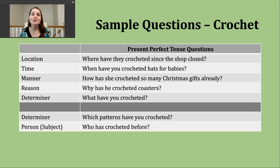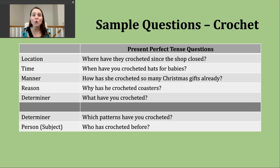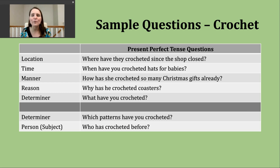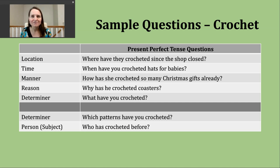Other types of questions we ask are about the manner in which an action is done. We use the question word how for those. "How has she crocheted so many Christmas gifts already?" Some people really like to make things for others as part of holiday gifts. So I might be asking this question and it's July now, and I see that someone has made hats and gloves and scarves. Wow — how has she been able to do this in maybe just six months?